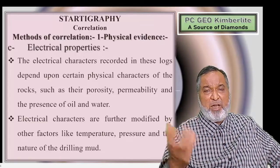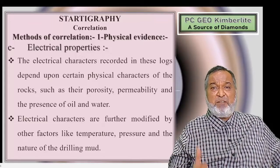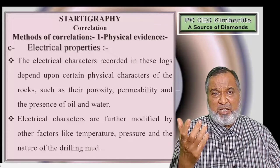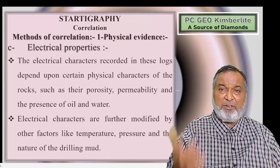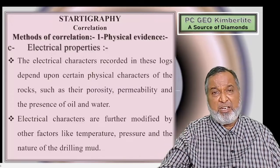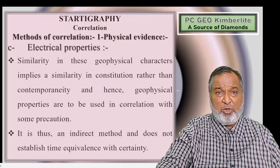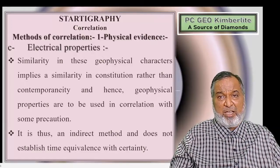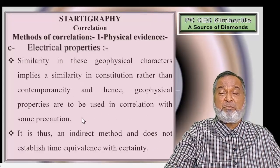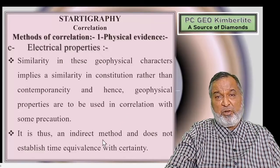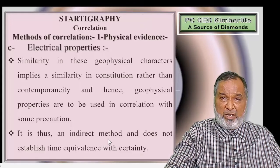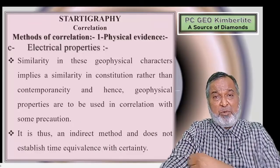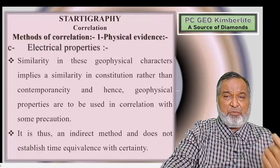The physical properties relevant to electrical logging are porosity, permeability, and the presence of oil, gas, and water. Electrical characters are further modified by factors like temperature, pressure, and the nature of the drilling mud used. Geophysical properties imply similarity in composition rather than contemporaneity, so geophysical properties must be used for correlation with some precautions. This is an indirect method and does not establish time equivalence with certainty.